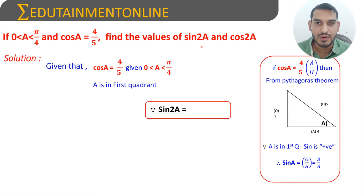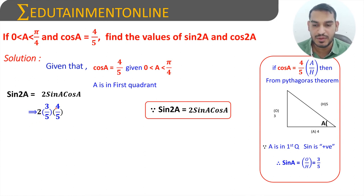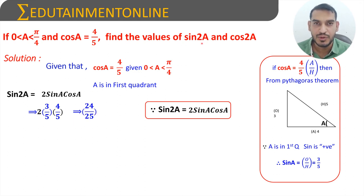To find the value of sin 2A, we use the formula sin 2A = 2 sin A cos A. Substituting, sin A is 3/5 and cos A is 4/5. Simplifying: 2 × 3 = 6, and 6 × 4 = 24, over 5 × 5 = 25. Therefore, sin 2A equals 24/25.